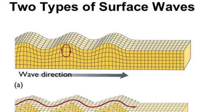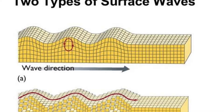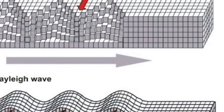The last type is a surface wave. They travel only on Earth's surface and are classified as a form of a mechanical surface wave. They diminish as they move farther from the surface and are slower than both S and P waves.